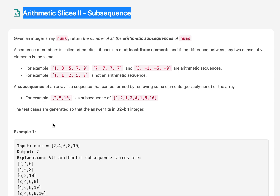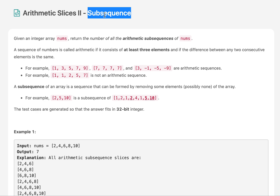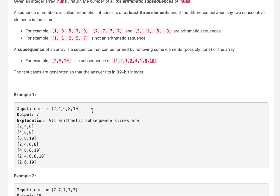Hello everyone, welcome to Day 10 of the September LeetCode challenge. Today's question is Arithmetic Slices II. In this question we need to identify those subsequences which form an arithmetic progression. There is a minimum condition: there must be at least three elements in it, and we need to return the count of all such subsequences.